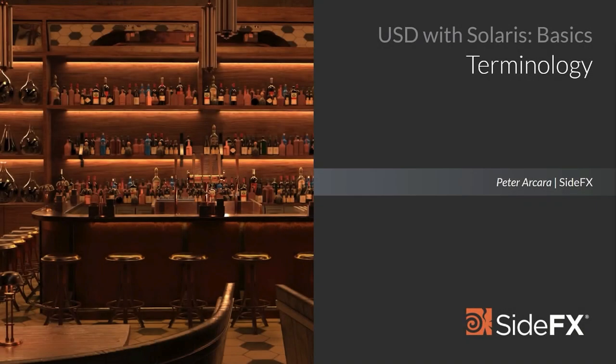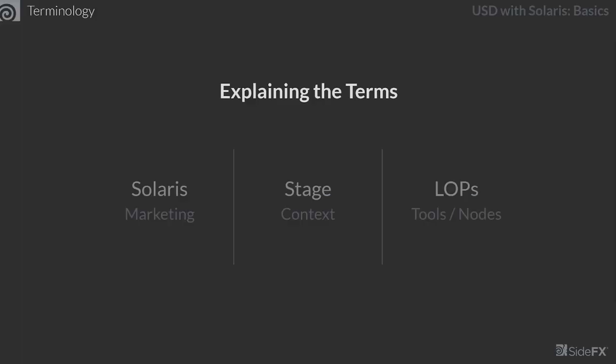Let's begin by talking about terminology. There are three overarching terms you'll hear as we discuss USD. The first is Solaris, an umbrella term for all tools within Houdini that work with USD. The next is Stage, the context name we work within — similar to the object context or material context in Houdini. Finally, we have LOPS, which are the nodes we place onto the stage to compose our USD scene.